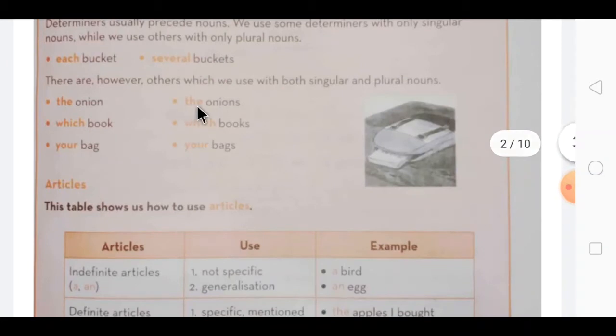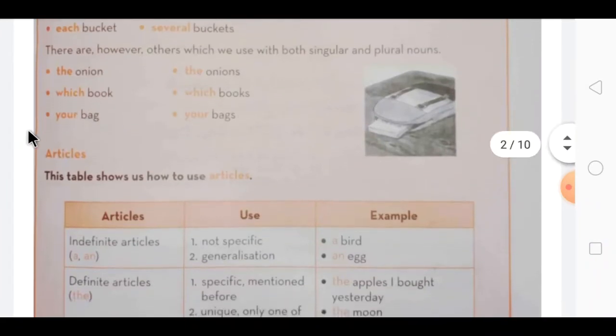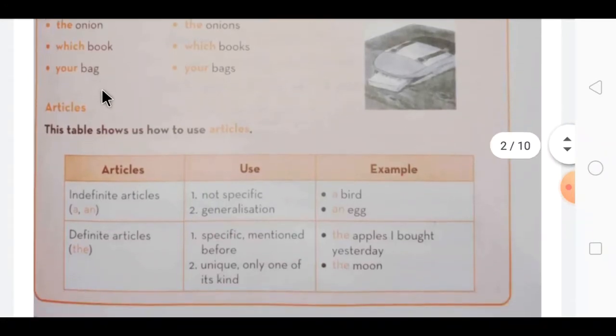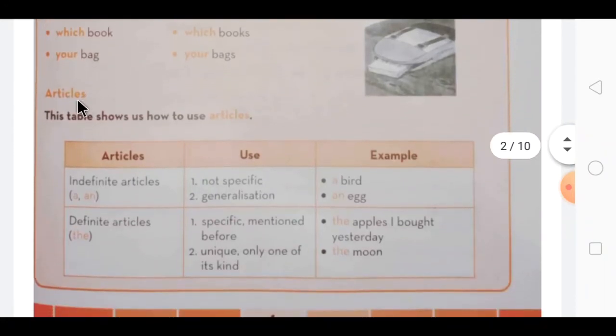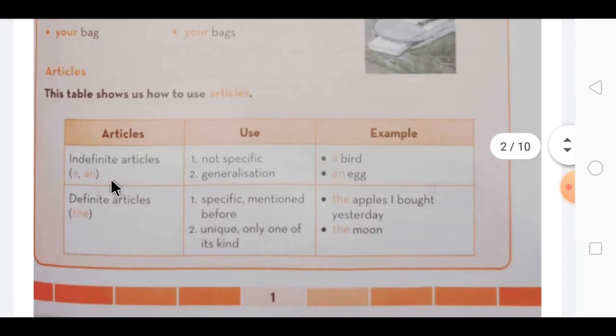Like the onion, the onions. Like which book, which books, your bag, your bags. So our first type of determiner, articles. Here one table is given about the explanation of articles. So first, indefinite articles - a or an.